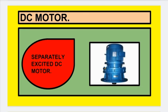In the separately excited DC motor, the field winding is excited by using separate connections. That is why its name is separately excited DC motor. This is the pictorial representation of the separately excited DC motor.